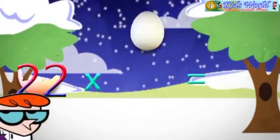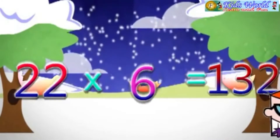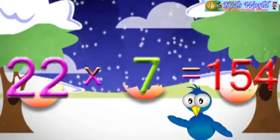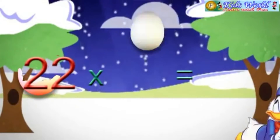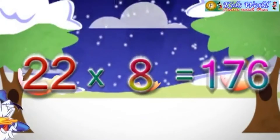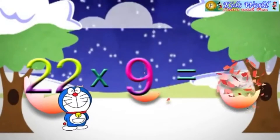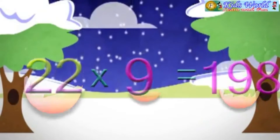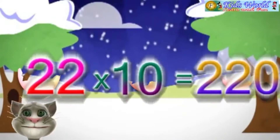22 into 6 is equal to 132. 22 into 7 is equal to 154. 22 into 8 is equal to 176. 22 into 9 is equal to 198. 22 into 10 is equal to 220.